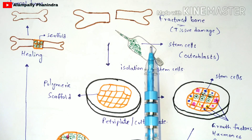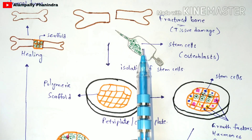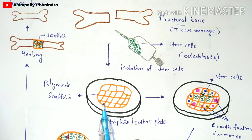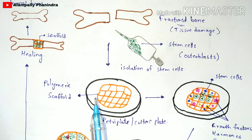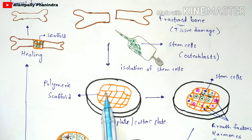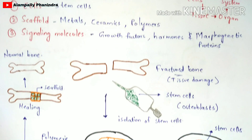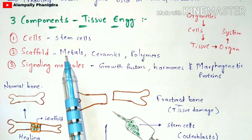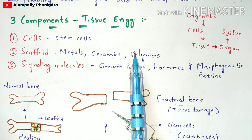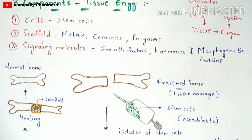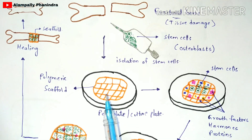In the next step, keep the osteoblasts aside and take an empty petri plate. On this petri plate, place a polymeric scaffold. Among the synthetic natural scaffolds — metals, ceramics, and polymers — polymers are mostly preferred, which is why we use a polymeric scaffold here.